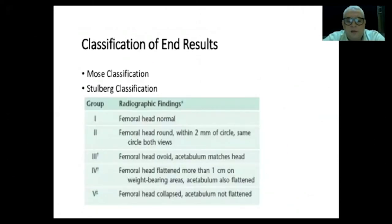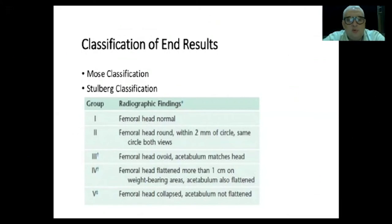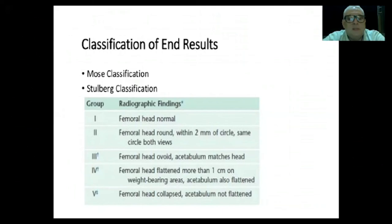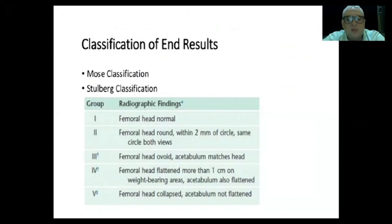Classification of end results looks at the shape of the femoral head and proximal femur — this is the Stulberg classification. In Group 1, there is a rounded head with a normal proximal femur. In Group 2, a rounded head with deformity such as coxa breva, coxa magna, trochanteric overgrowth, or coxa vara. Group 3 is an oval head. In Groups 4 and 5, there is flattening of more than 1 cm of the lateral part of the head — congruent with the acetabulum in Group 4, and not congruent in Group 5.